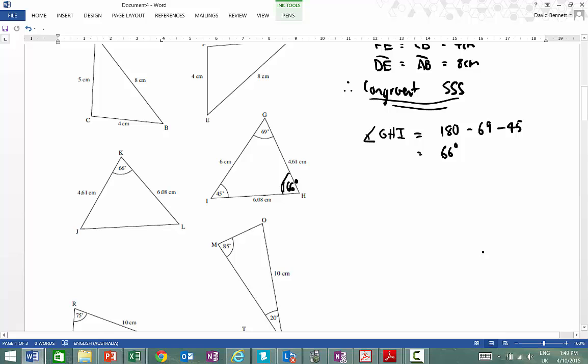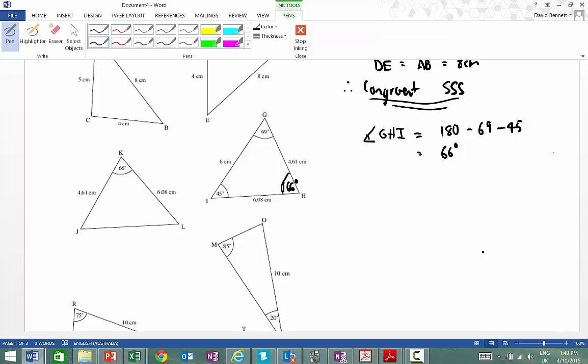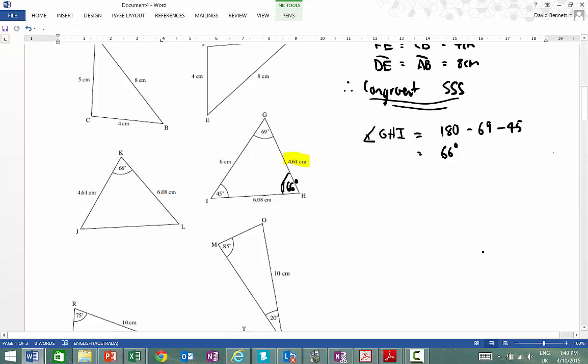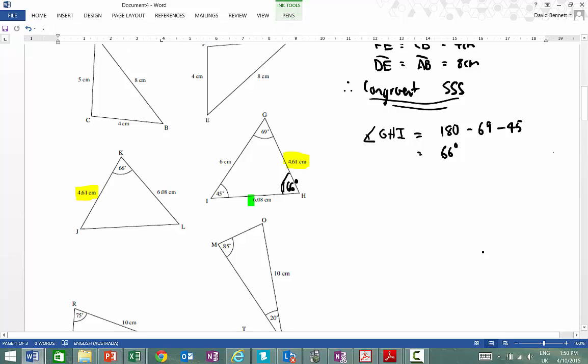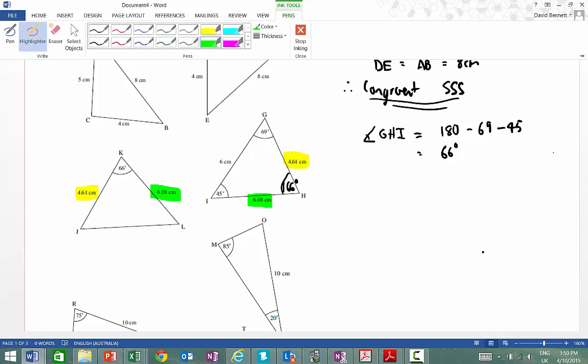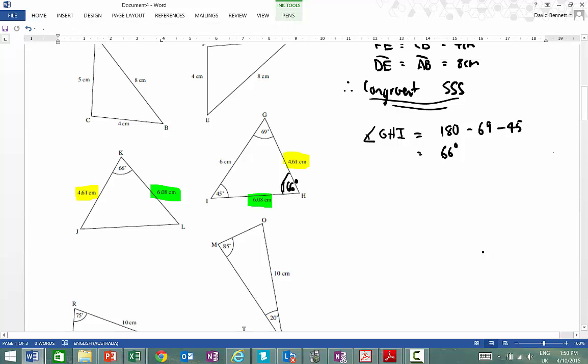And now we've got this side here, we're thinking about what we do have. We have this side, corresponds to that side there. We have this side over here, corresponds to this side over here. So therefore, what we have is a scenario where we have,